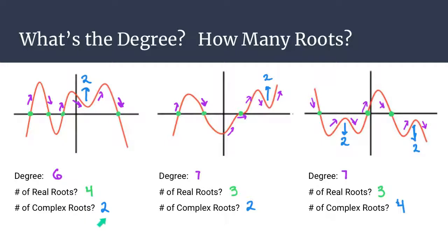Notice that the number of complex roots is always going to be even, because you're always going to have two complex roots coming from each parabola piece. It's not possible to have an odd number of complex roots. Also, note that the number of real roots and complex roots might not add up to the degree — for example, three real roots and two complex roots does not add up to seven — because a triple root counts as one x-intercept for our purposes, but contributes three to the degree. We just look at the number of x-intercepts when counting real roots.